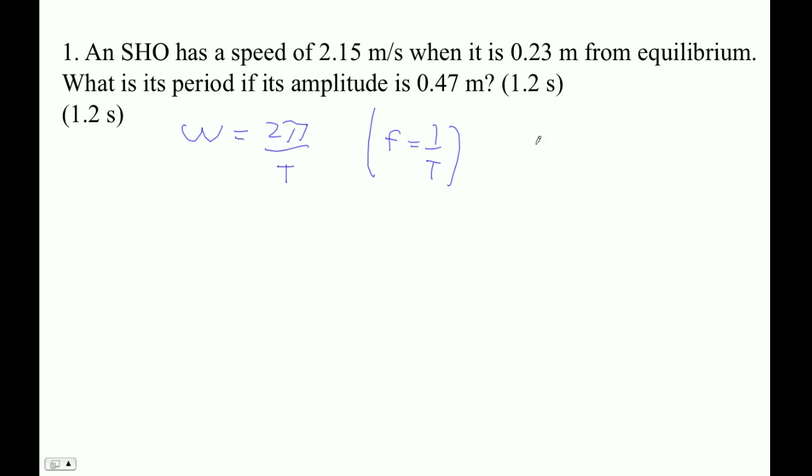And then the other formula this uses is that the velocity is equal to plus or minus omega times the square root of x naught, the amplitude squared, minus the position squared.